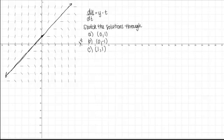Let's try drawing a solution through a different point. Let's do part B, which is (0,-1). This one's a little bit more challenging. It doesn't look like it's just going to be a straight line, it's some sort of curved solution here.